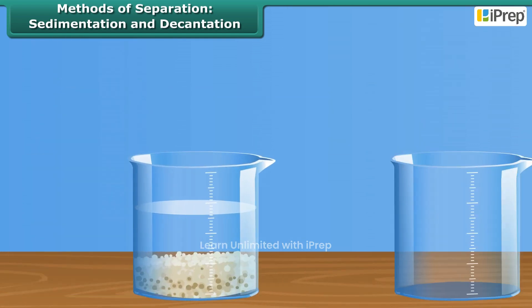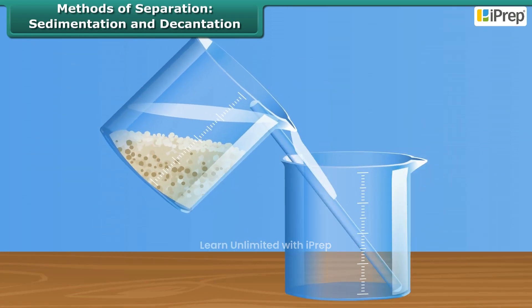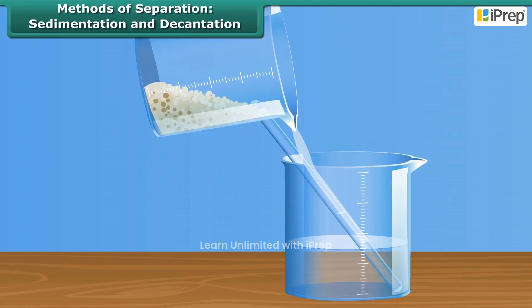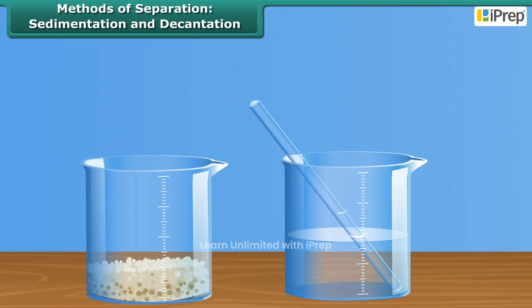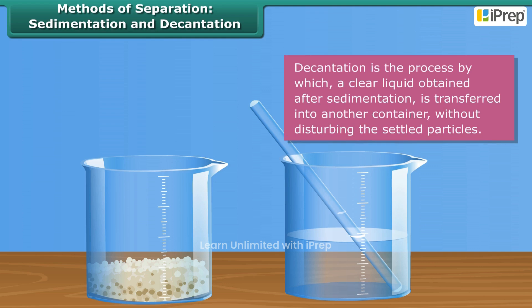Jack separated the upper layer of water from the mixture by gently pouring the clear water into another beaker without disturbing the sediment. This process of separation of a liquid from the sediment is called decantation.